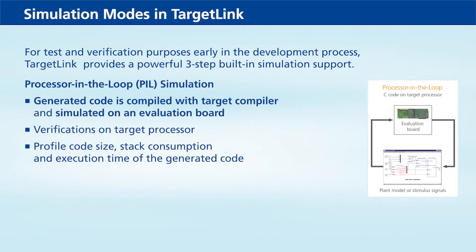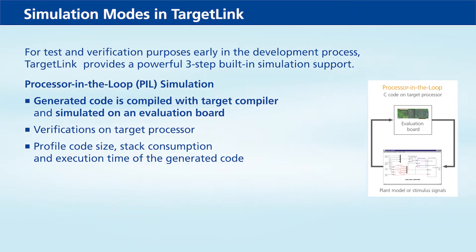In Processor-in-the-loop Simulation, the generated code is compiled with the target compiler and simulated on an evaluation board equipped with the same target processor as the final ECU. This type of simulation lets you perform final verifications on the target processor — for example, if there are any target-related issues. In addition, you can determine information on the code size, stack consumption, and execution time of the generated code.